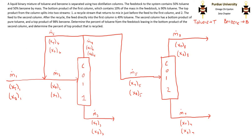Now let's fill this in with all the information given in the problem statement. The feedstock is 50% toluene and 50% benzene by mass. The bottom product of the first column, M.3, contains 10% of the mass in the feedstock, so M.3 equals 0.1 times M.1, and this bottom product is 90% toluene. The feed directly into the first column after the recycle point is 49% toluene. The bottom product of the second column is pure toluene, and the top product of the second column is 98% benzene.